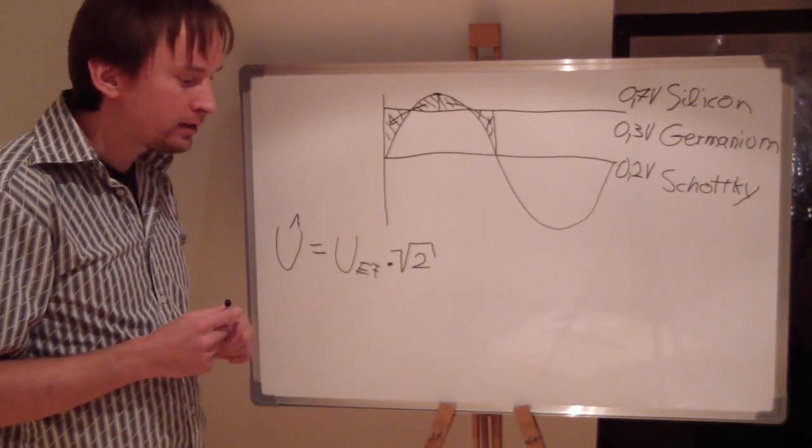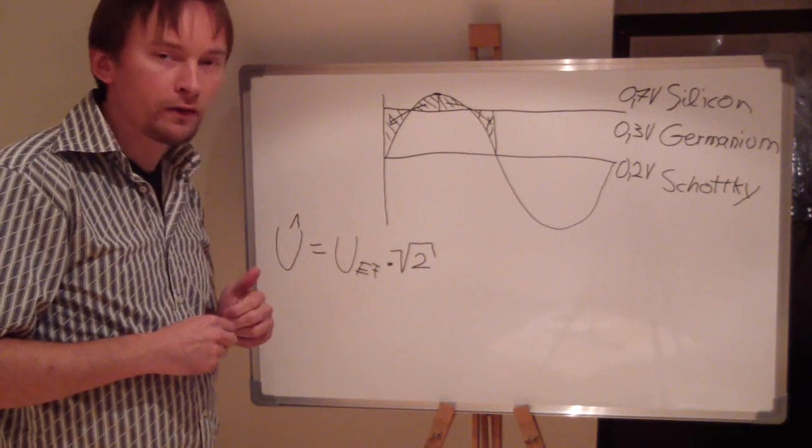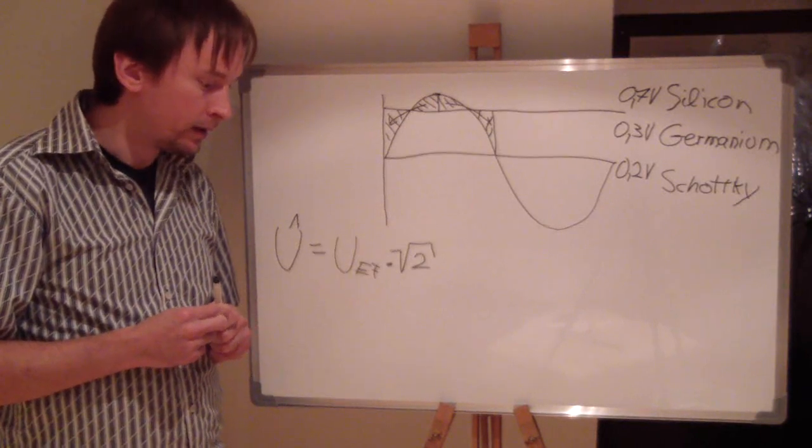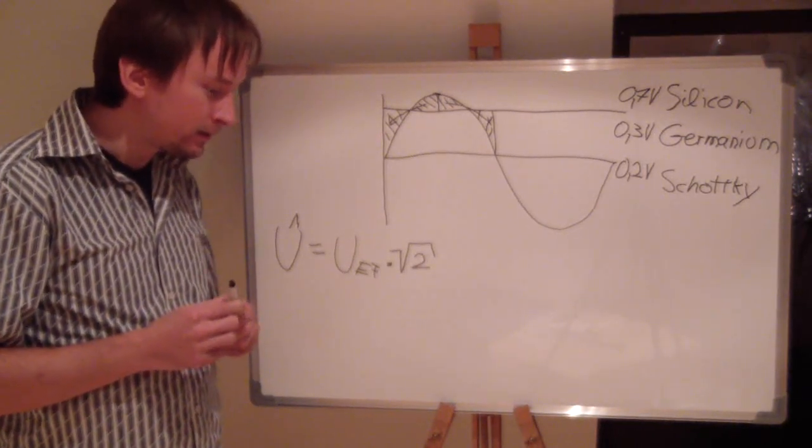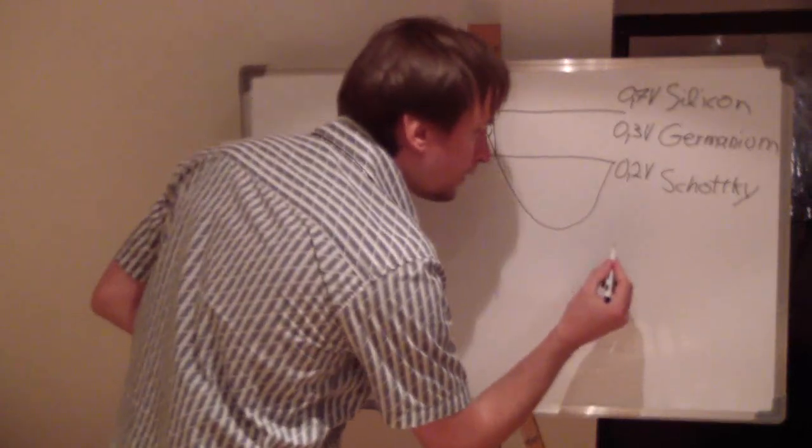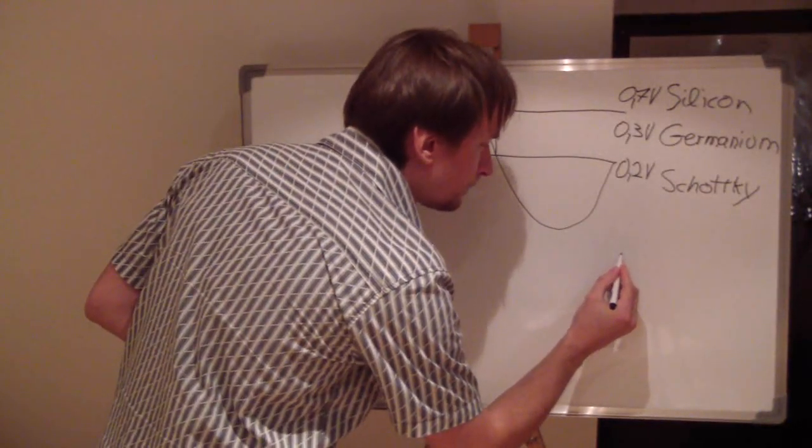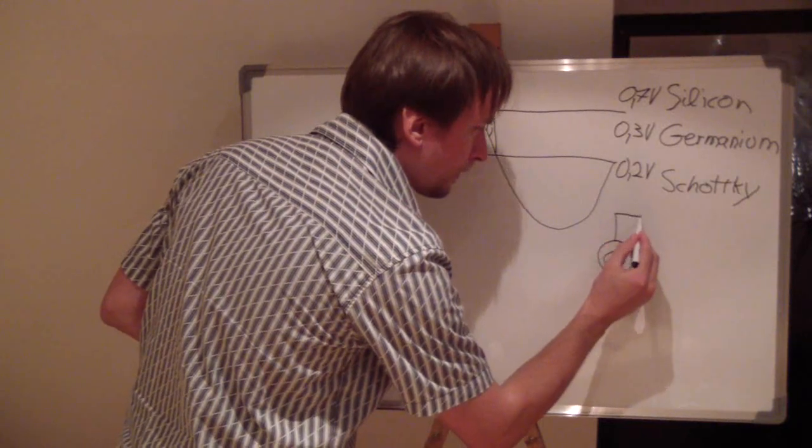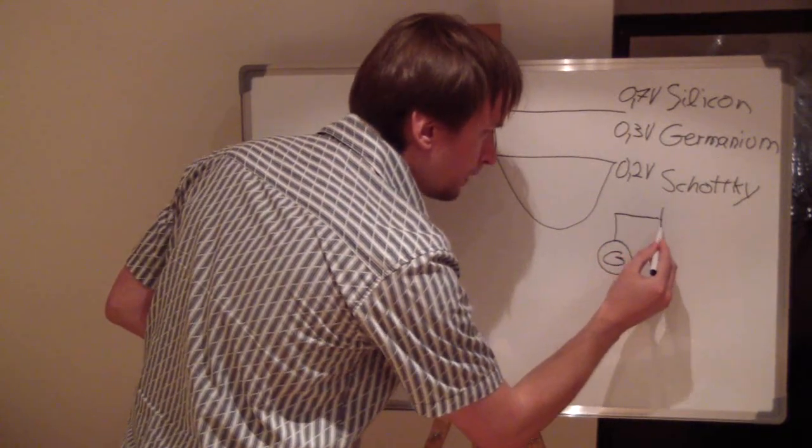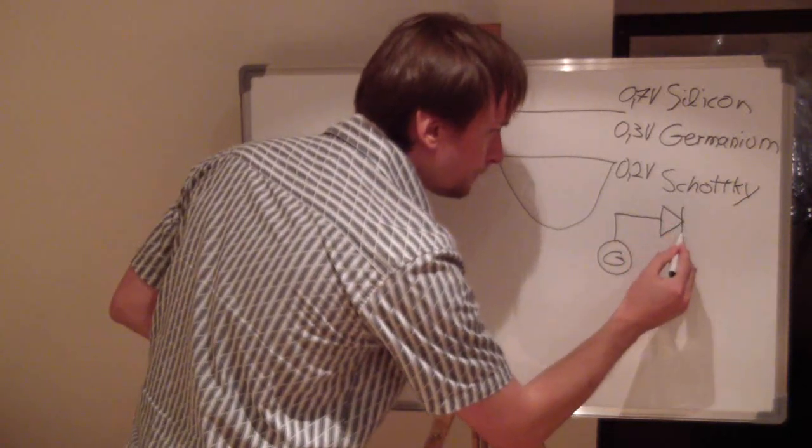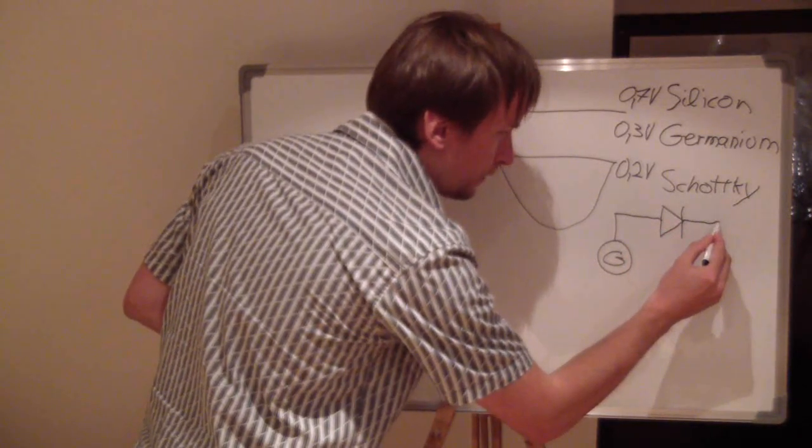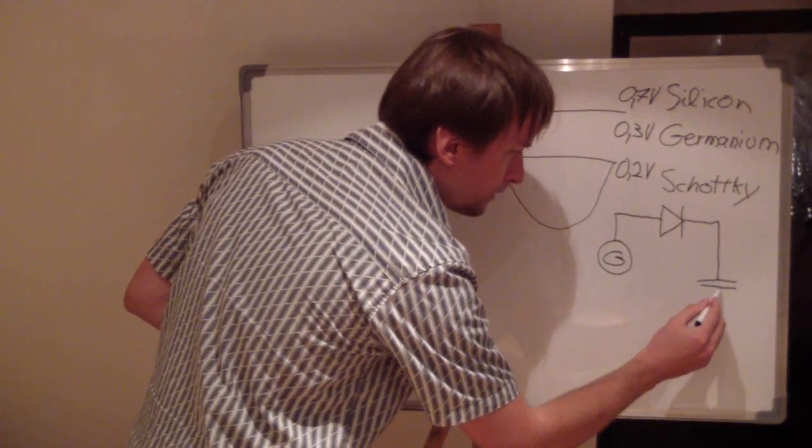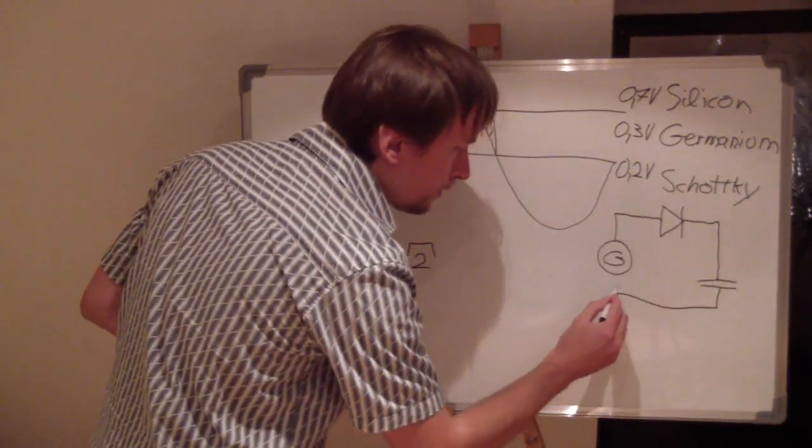then we can actually start to do the circuit of the voltage doubler. I decided I would do a Dillon voltage doubler. I will start with a part of it first. We have a generator, and this generator puts its electrons through a diode, and this diode connects to a capacitor, and this capacitor connects to the generator.